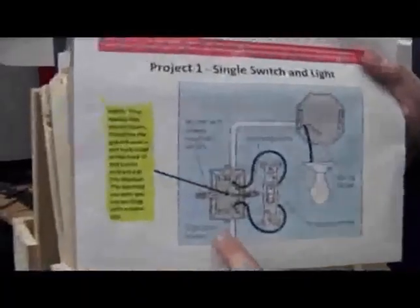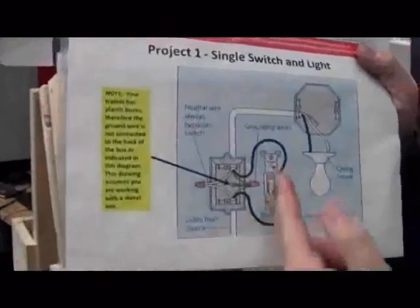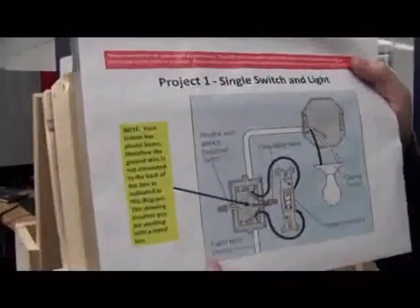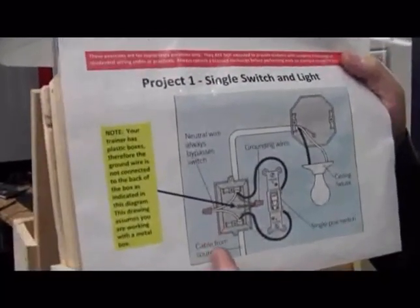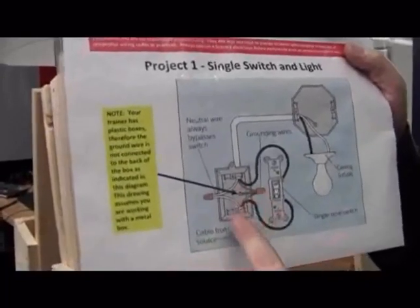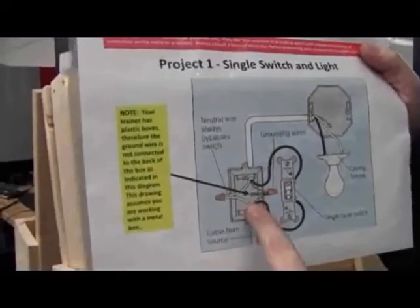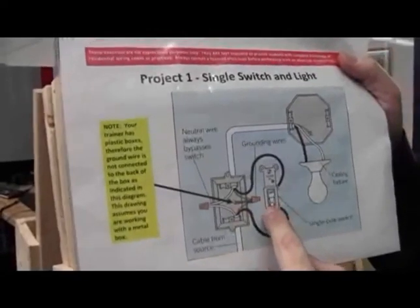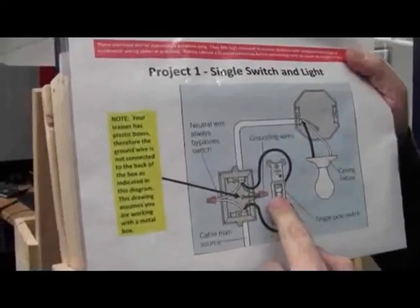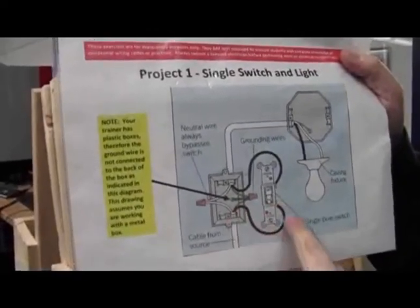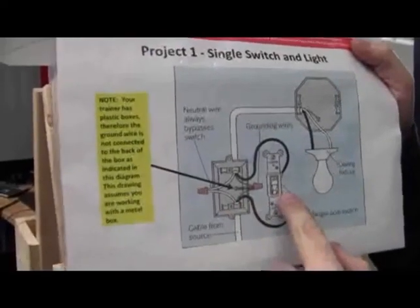Essentially what's going to happen is a cable is going to come in from the source, which of course is in a regular household situation your electrical box in your house. It's going to come into an electrical box that will wire into a switch, a single pole switch in this case. You can see that your black wire from the Romex will connect here to the bottom of the switch.